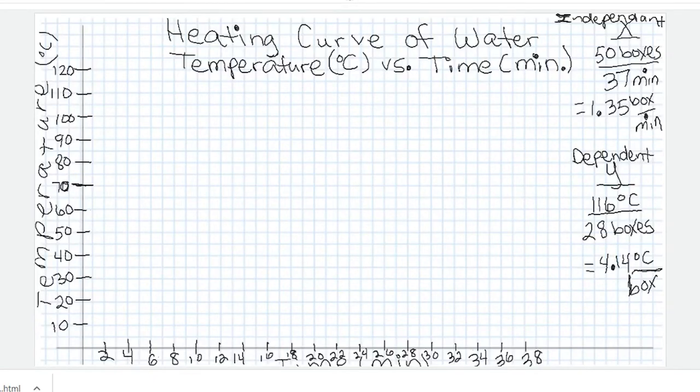Let's set up our graph. The name of our graph is heating curve of water. So what we did, we heated solid water, it became liquid water, and then it became gas.